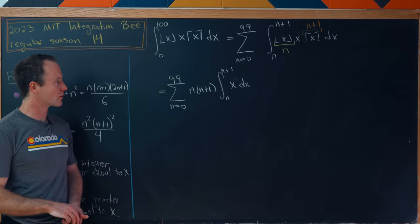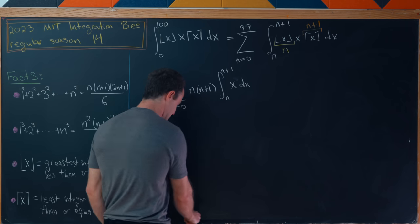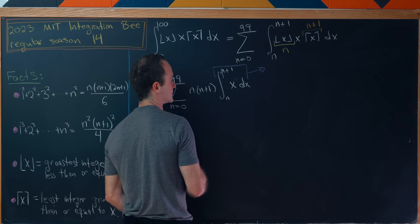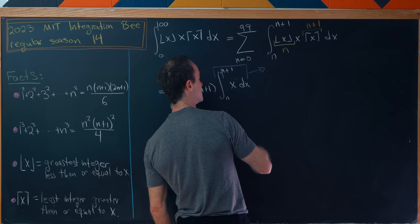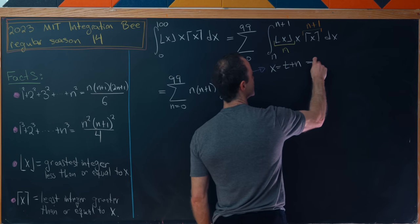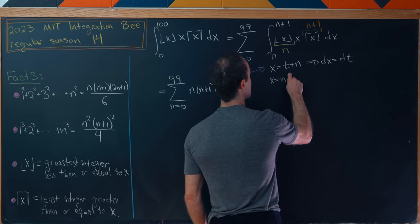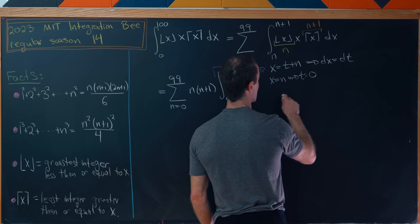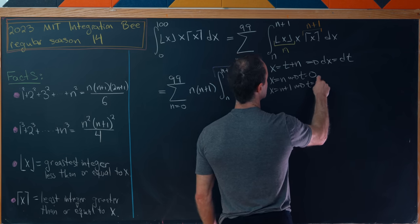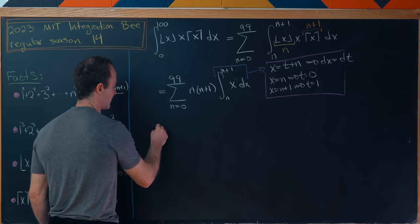Now we're going to look at this a slightly different way although the first couple of steps are the same. So at this stage I'll take this integral and do a change of variables. The change of variables I would like to do will be to set x equal to t plus n. Notice that means dx equals dt because n is a constant. When x equals n that tells us t equals 0, whereas when x equals n plus 1 that tells us t equals 1.